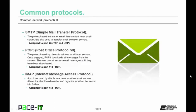Let's move on to SMTP — Simple Mail Transfer Protocol. It's the protocol used to transfer email from a client to an email server, and also between email servers. By default it's assigned to port 25, and it can use TCP or UDP. Then we have POP3 — Post Office Protocol Version 3 — the protocol used by clients to retrieve email from servers. POP3 downloads all messages from the server; the user cannot access email messages until they have been downloaded. It is assigned to port 110 by default and uses TCP.